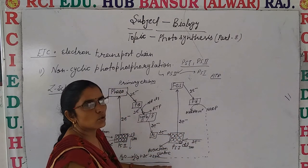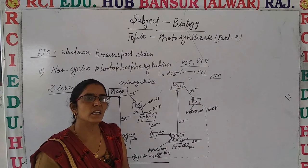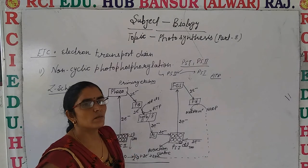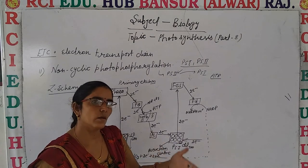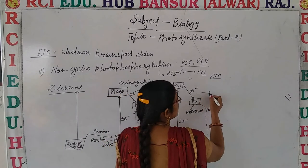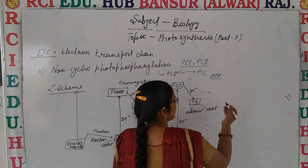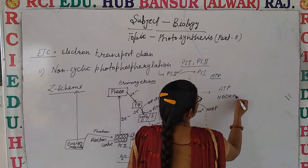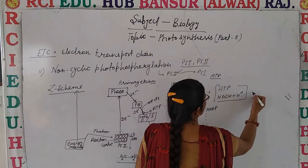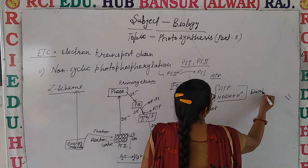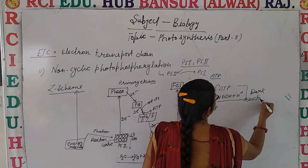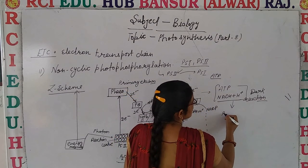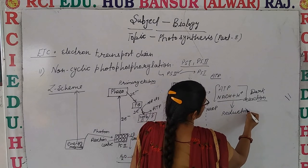So this was non-cyclic photophosphorylation, also known as the Z scheme. Here the light reaction is complete — the assimilated energy molecules produced are ATP and NADPH + H⁺. Where will these be used? In the dark reaction, for the reduction and fixation of carbon dioxide.